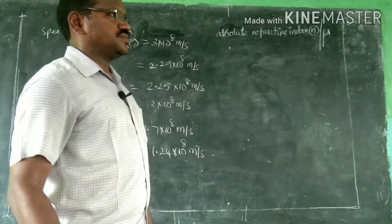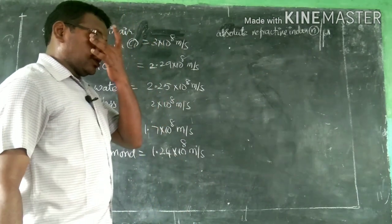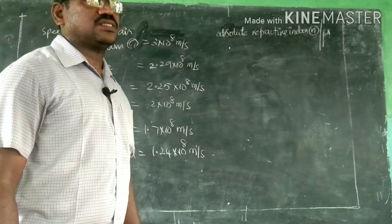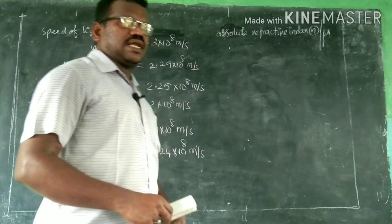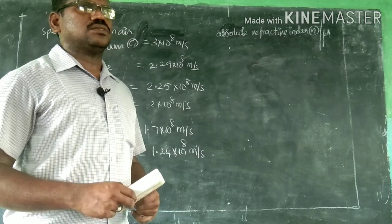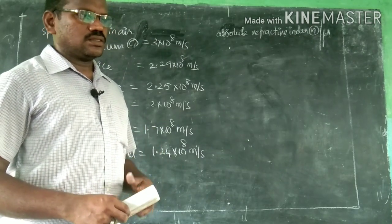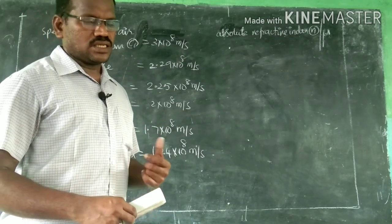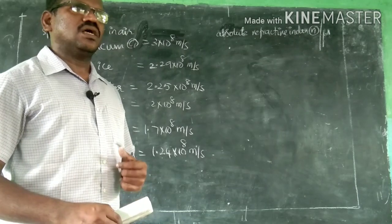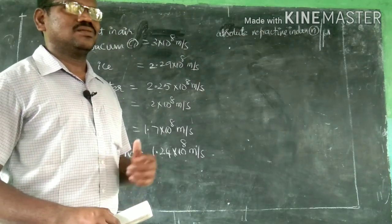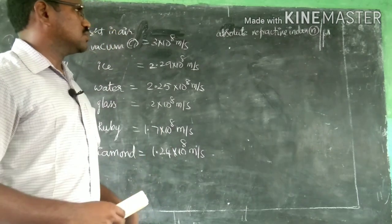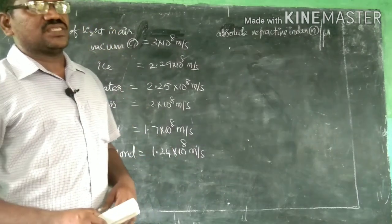Before, in the topic of refraction of light at plane surfaces, we already discussed about the glass slab activity. I already given some of the definitions of incident ray, refracted ray, emergent ray, angle of incidence, angle of refraction, angle of emergence, the surface angle, and various other topics.